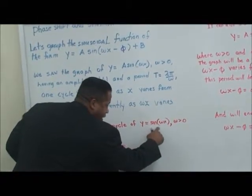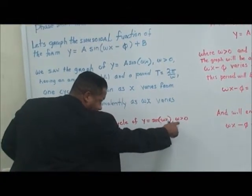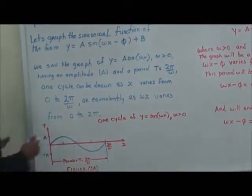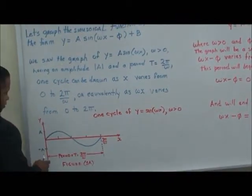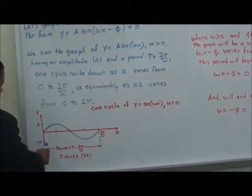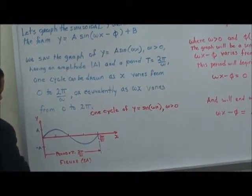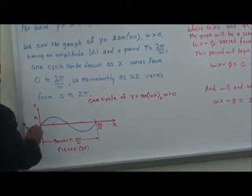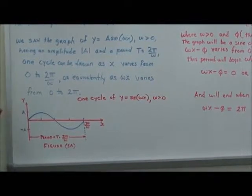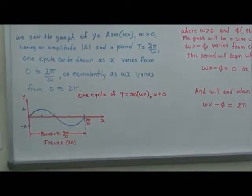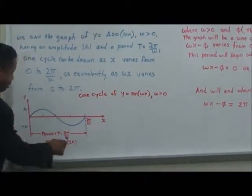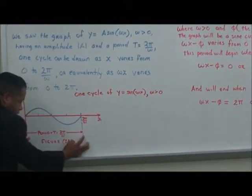One cycle of y equals sine(ωx), where ω is greater than 0 — we have a basic graph of the sine here — talking about the amplitude from negative A to positive A, where all the values of this graph lie between negative A and positive A. The period equals T, which equals 2π over ω — from here to here is the actual period.